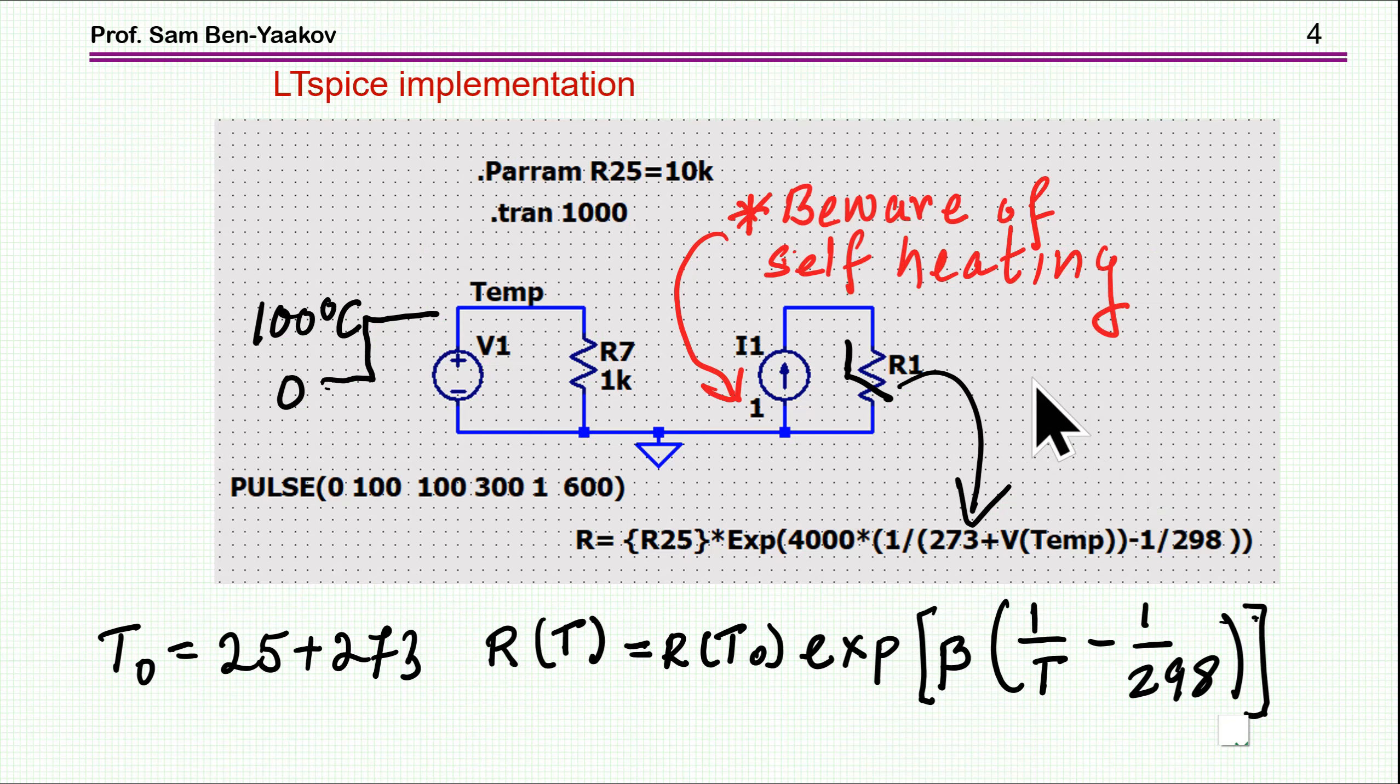It is very convenient to use this equation, this experimental equation, in LTSpice. All you have to do is really to define the resistance by this equation. So here I have it, R25. This is the parameter, and you have to define it. And then I'm assuming beta to be 4,000, and this is 273 plus the temperature that I'm interested in. And 1 over 298, which is 25 plus 273. So this is basically one-to-one expression that I'm just putting here to describe this resistor.